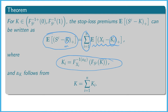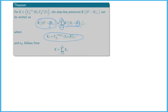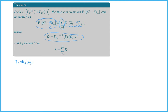Before we give the proof, we first prove a side result. Remember that in chapter 6 we proved the following result for the tail value at risk: if you have the tail value at risk of a random variable X, you can write this as F_X^{-1}(p) plus 1 over (1 minus p) times the expected shortfall, meaning the stop-loss premium with retention F_X^{-1}(p).